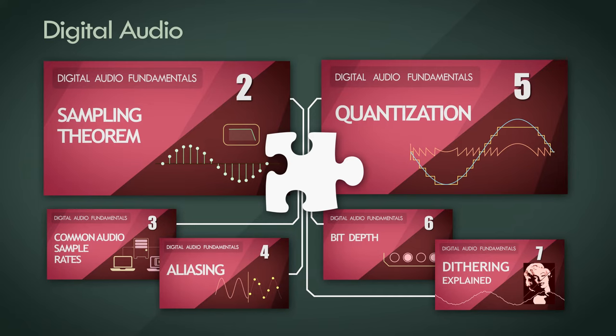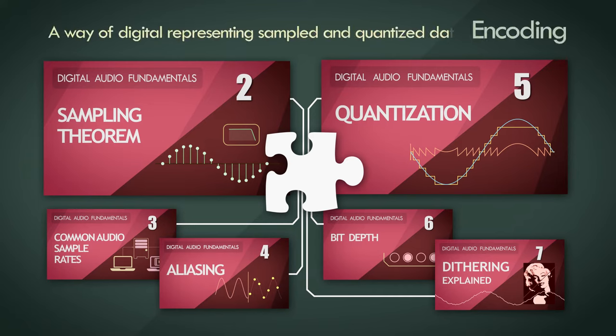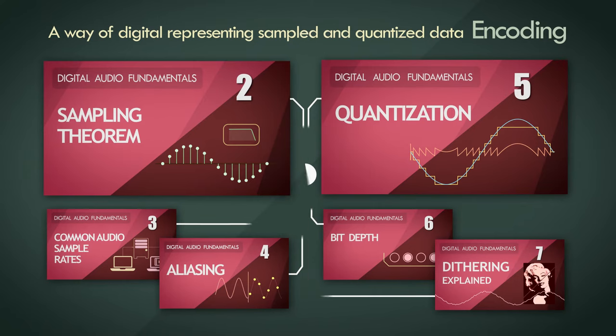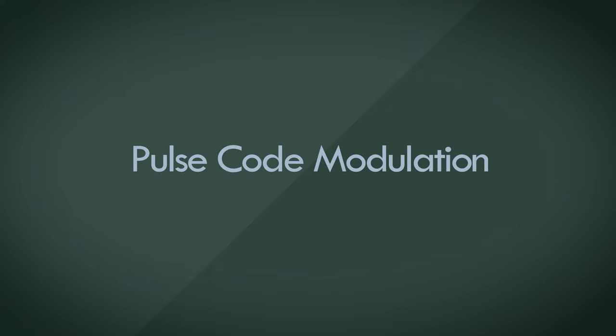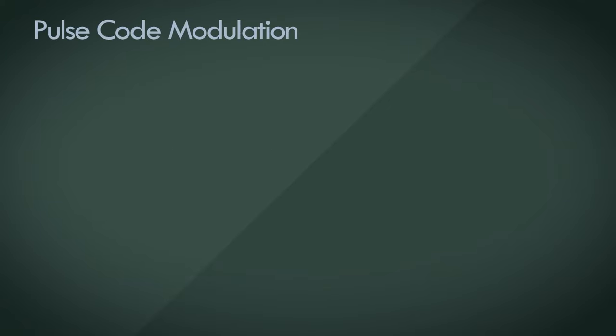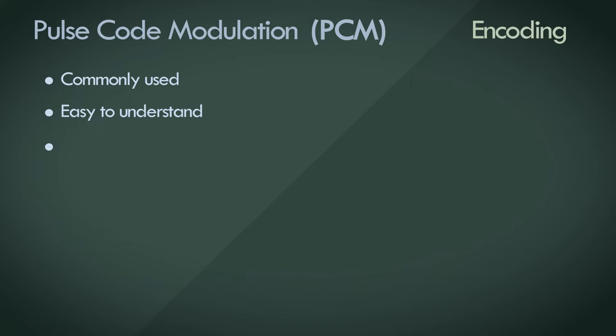The final piece is encoding, a way of digitally representing sampled and quantized data. The title of this video is pulse code modulation, and pulse code modulation is a specific type of encoding strategy. The reason why we're talking about pulse code modulation specifically is because it's the most common encoding scheme in use, the easiest to understand, and a classical method that's been around since the dawn of digital audio.